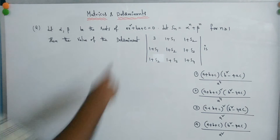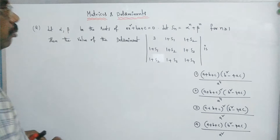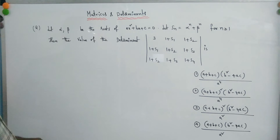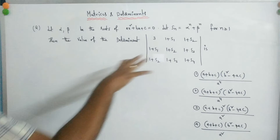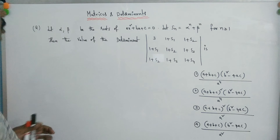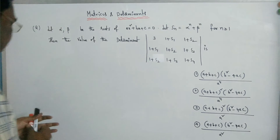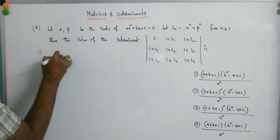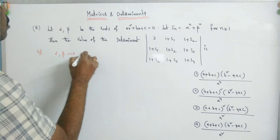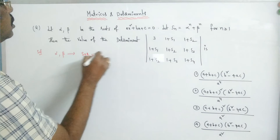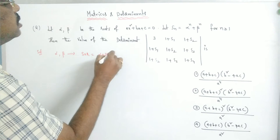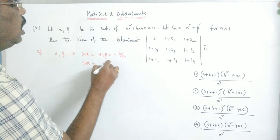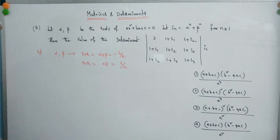Next problem: let α and β be the roots of Ax² + Bx + C = 0. And Sn = α^n + β^n. Then the value of the determinant is to be found. Now, since α and β are roots: sum of roots α + β = −B/A, and product of roots α·β = C/A.